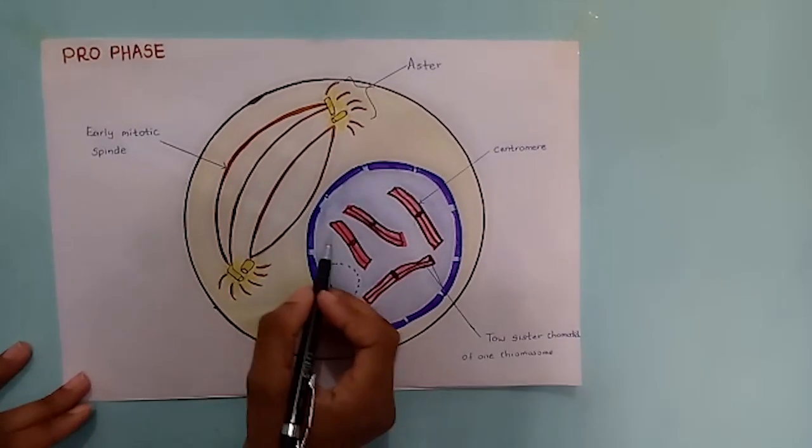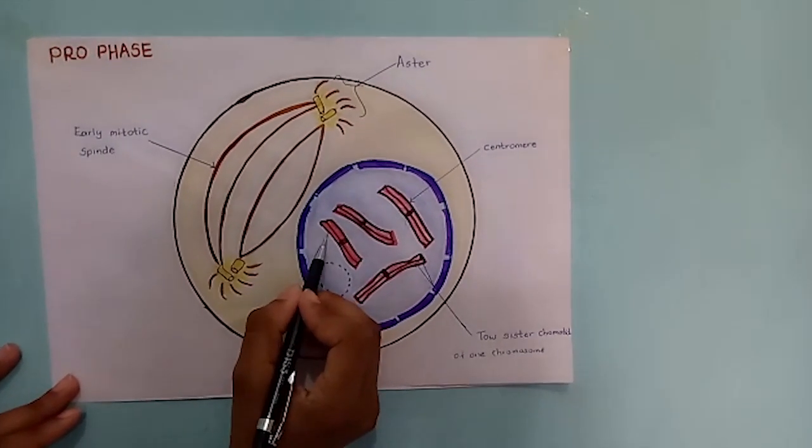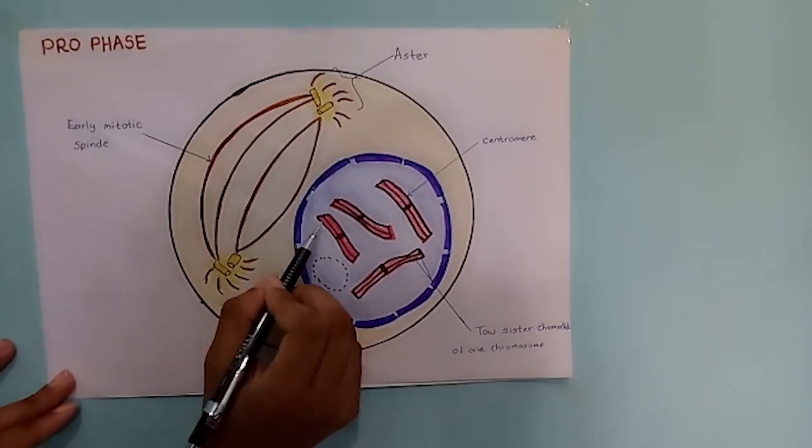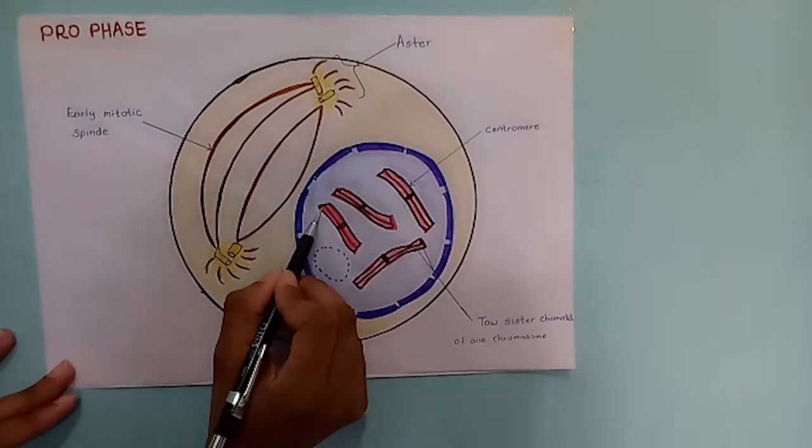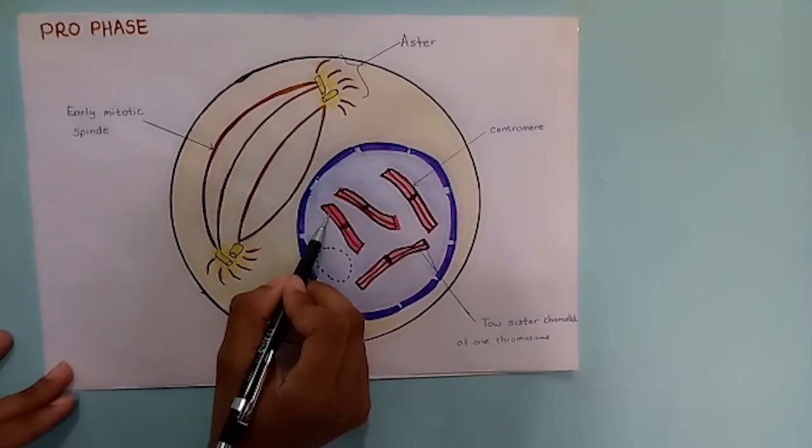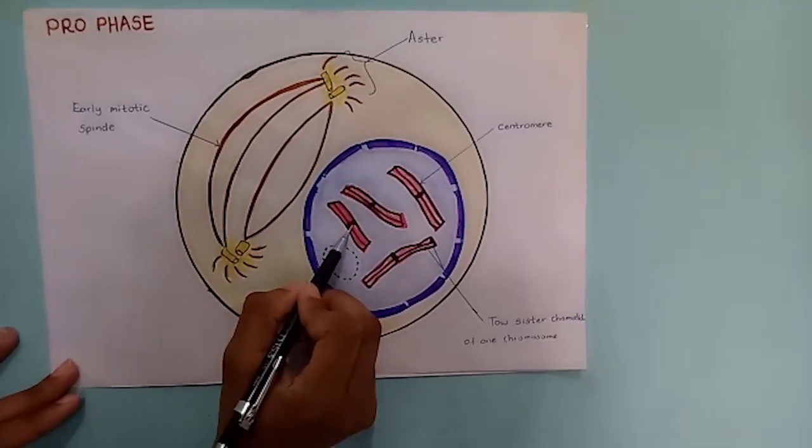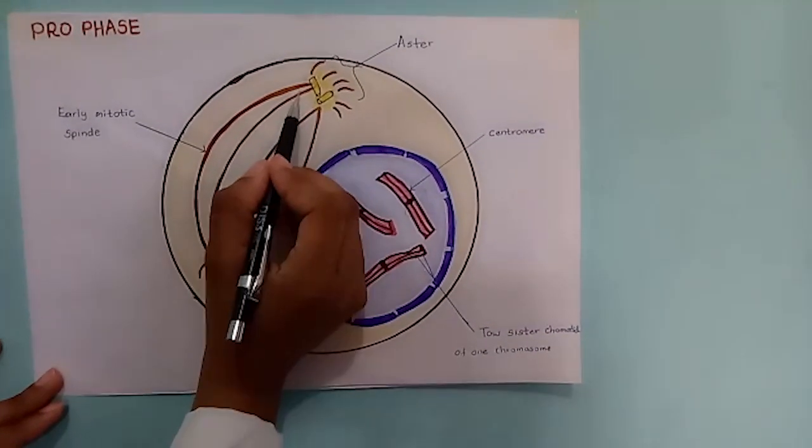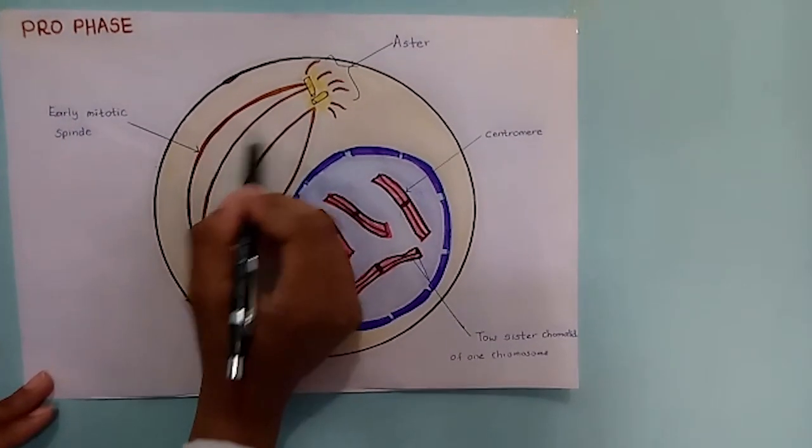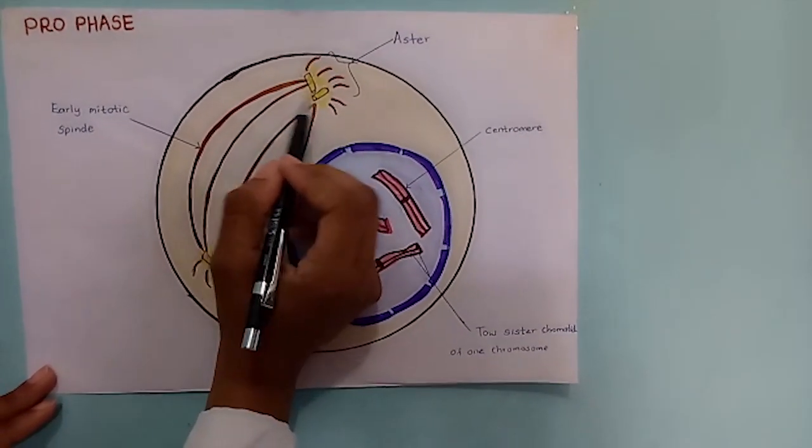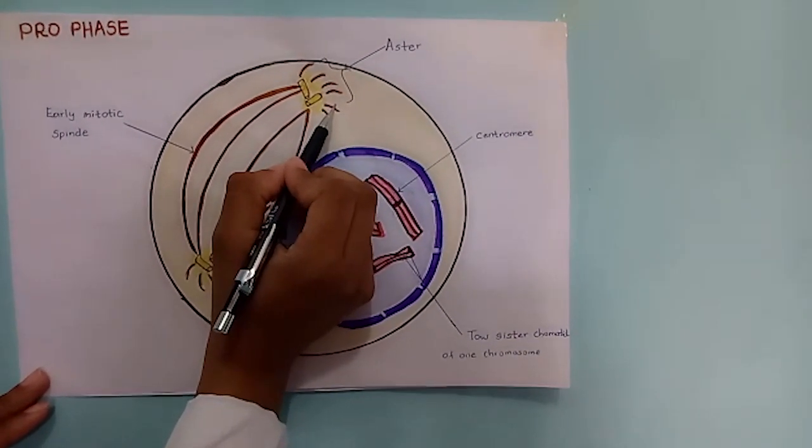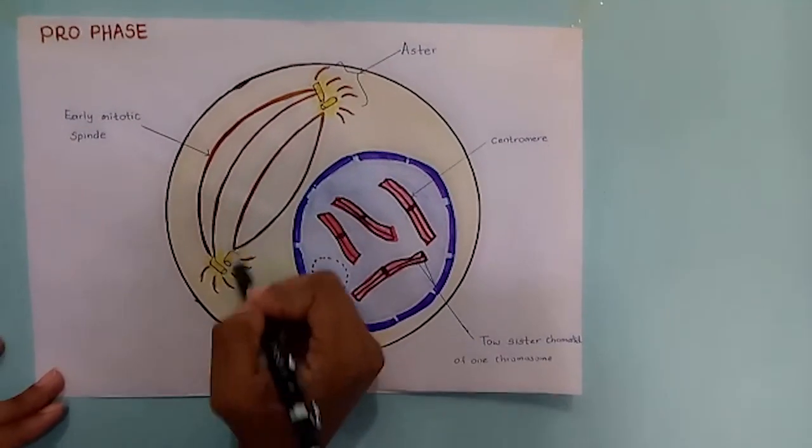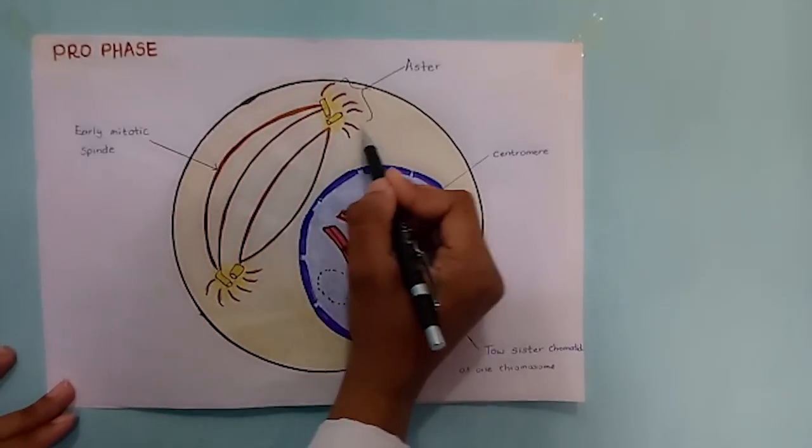In prophase, chromosome fibers become tightly coiled. The nucleoli disappear. Each duplicated chromosome contains two sister chromatids joined at the centromere. The mitotic spindle begins to form from centrosomes and microtubules. Radial array microtubules begin to form, and centrosomes move away from each other.